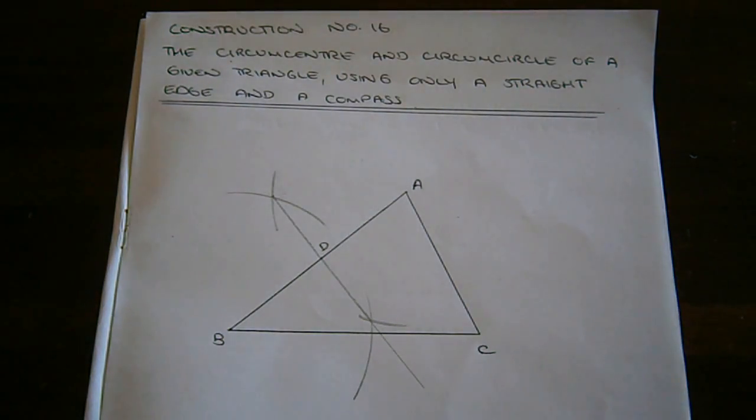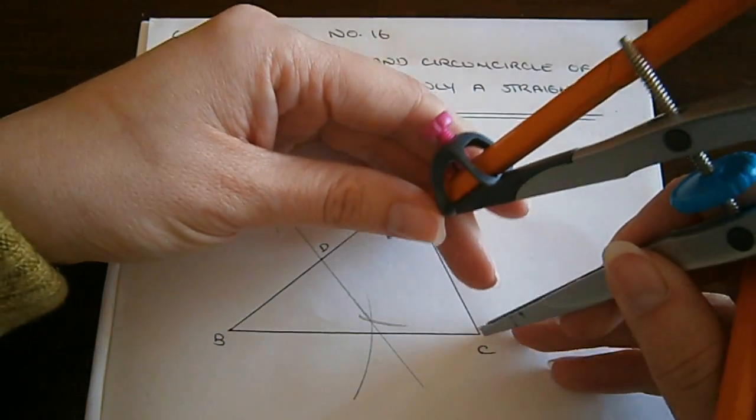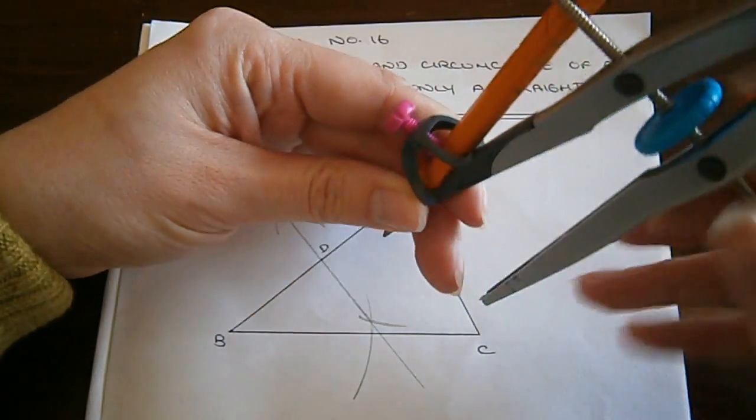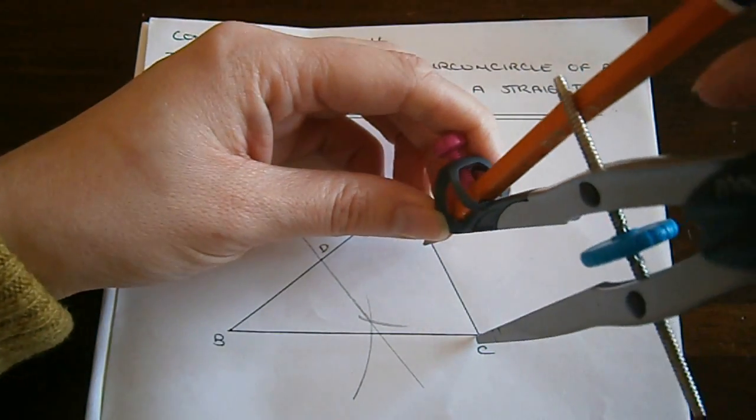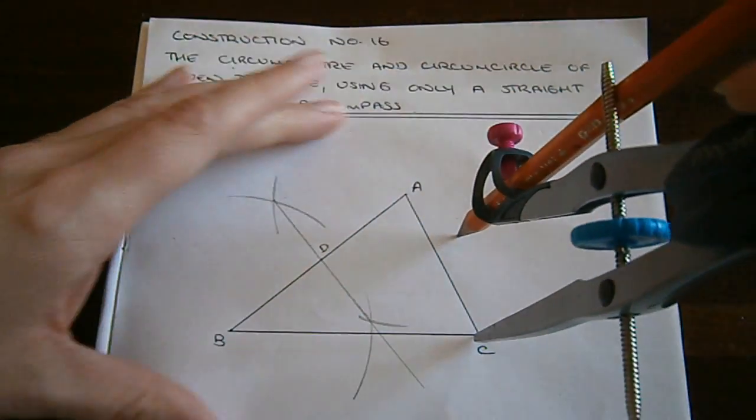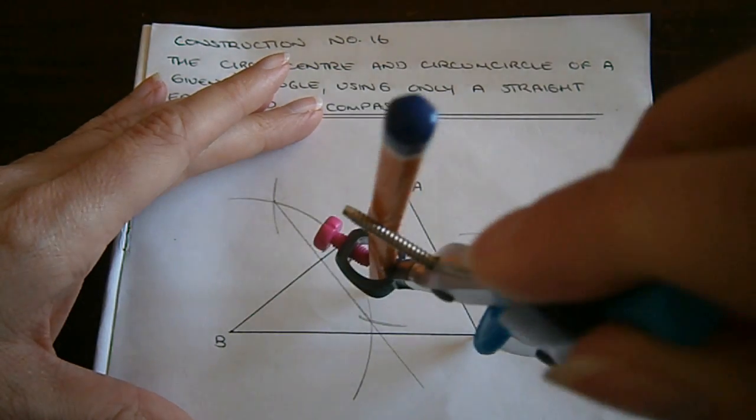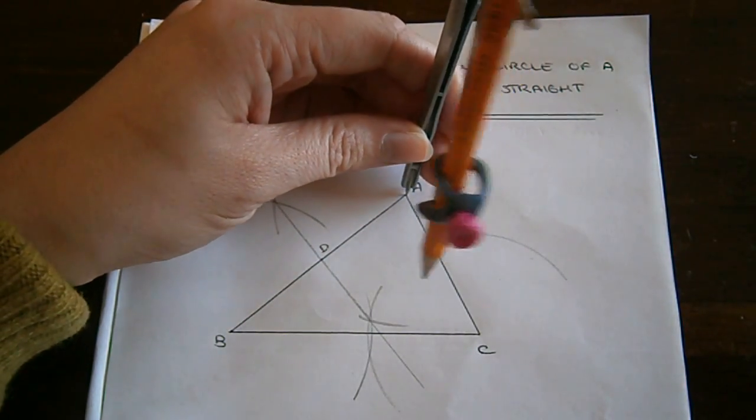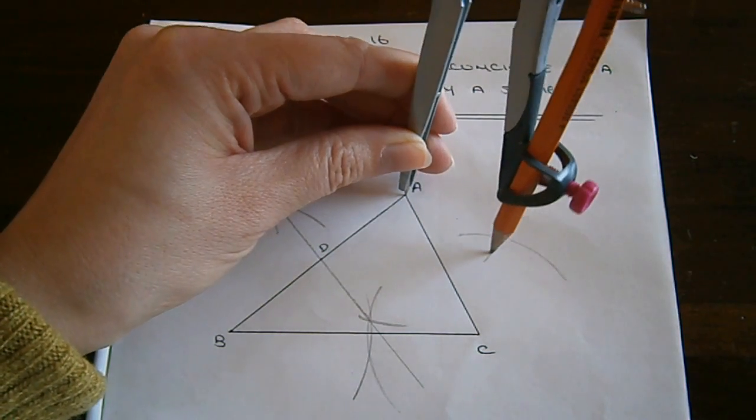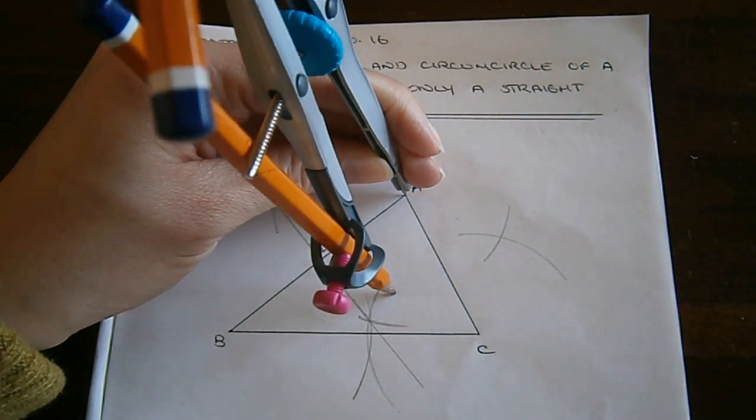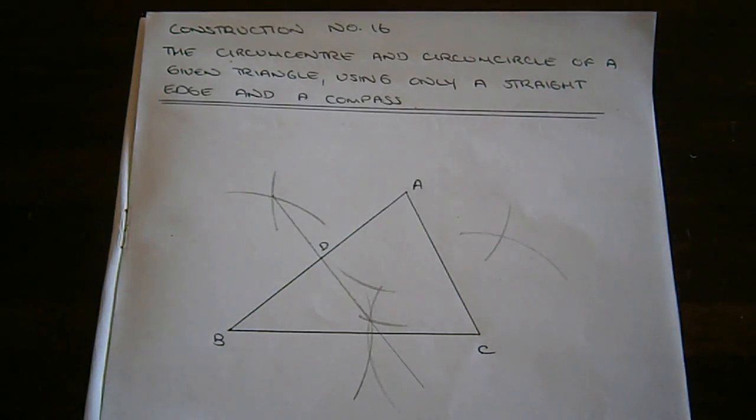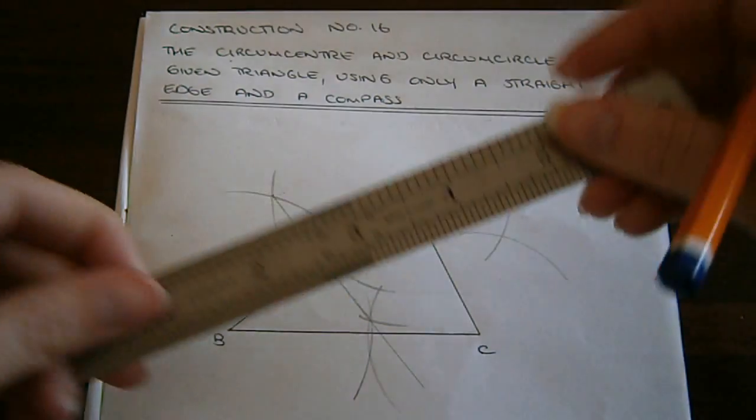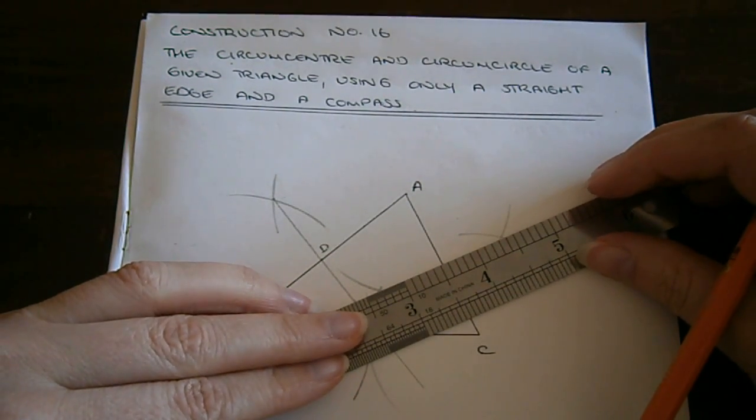Next I'll do the same for AC. So again, I draw my arcs on either side of AC. Keep the compass the same width and do the same at A. And I join my intersection points.